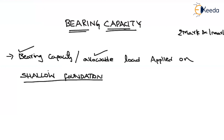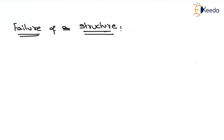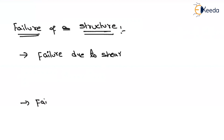Before moving on to understand what is meant by shallow foundation, first we have to study about the failure of a structure. If your structure is laid on a soil, when will you consider a failure of a structure with respect to the soil — not with respect to elements like beams, columns, or slabs? There are two types of failures: one is failure due to shear, and the second one is failure due to excessive settlement.